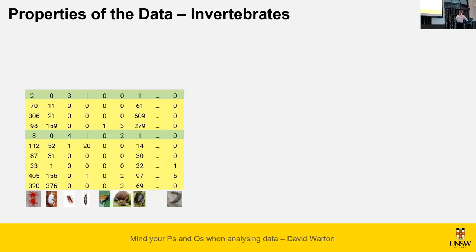We need to think about the properties of data that looks like this. You can see this column here with nearly all zeros — it's bugs. There are plenty of bugs around but not many crawl along the ground and fall into a pitfall trap. So the mean there is going to be small, near zero, and there's not much variation from one place to the next, so the variance is near zero as well. Looking at the mites over here, the mean is about 100 and there's a lot of variation — sometimes 8, sometimes 100, sometimes 400.